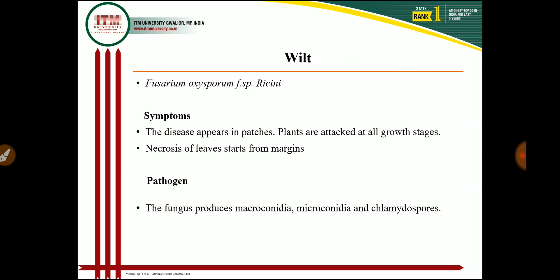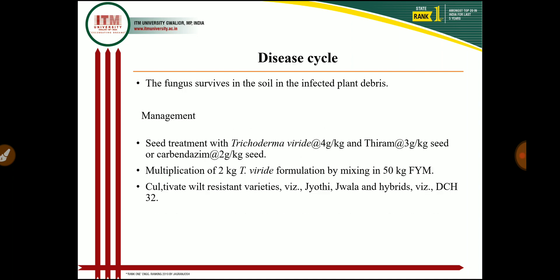The fungus mainly survives in the soil in infected plant debris with the help of chlamydospores. This fungus is also seed-borne; if infected seed is sown in the field, the grown plants are attacked by Fusarium oxysporum. Primary infection occurs through infected seed, while secondary infection may be caused by conidia disseminated by rain splash and irrigation water.